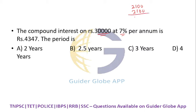For two years, the second year interest is approximately 2,400, giving a total of approximately 4,200. Since the target is 4,347, let's try 2.5 years — adding another half-year interest of 1,050 gives 5,250.